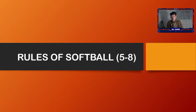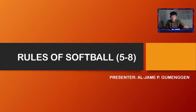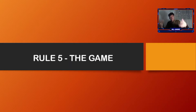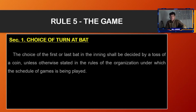Good day everyone, we're going to discuss the rules of softball. Since we're done discussing rules one to four, let's proceed to rules five through eight. I'm the presenter, Arjun Buminggen. Rule number five: The Game. First is section number one, choice of turn at bat.